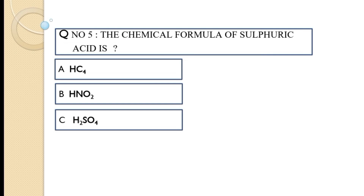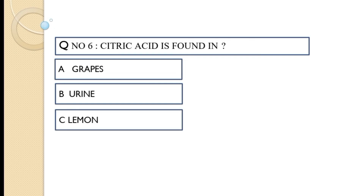Question number five: the chemical formula of sulfuric acid is — option A: HC4, option B: HNO2, option C: H₂SO₄. The correct answer is option C, H₂SO₄.